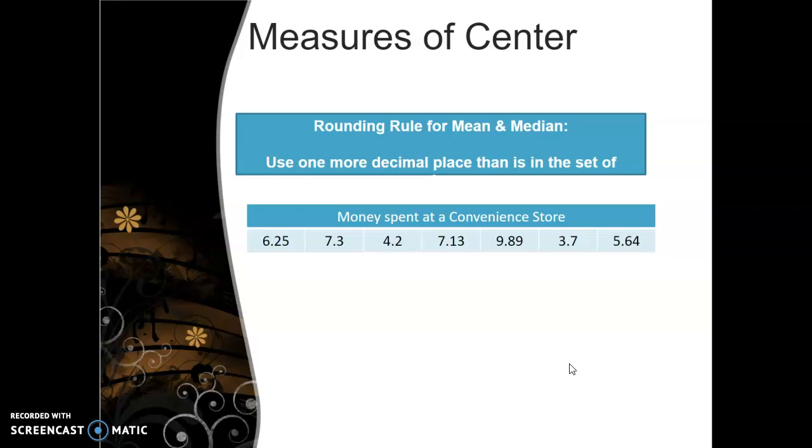Okay, finally, the rounding rule for the mean and the median where you could get some decimals. The rule of thumb that we use is use one more decimal place that is in the set of data. So let's say you're looking at money spent at a convenience store. So it looks like here I have two decimal places, right, because it would be cents. I have two decimal places. So if I'm finding the mean, I add up all of the money, divide by the total number, which is 7. And the number I get is a really long decimal, 6.301. Since I have two decimal places given in the data set, I'm going to round this to three decimal places, 6.301.